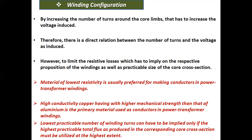The material of lowest resistivity is usually preferred for making conductors in power transformer windings. High conductivity copper, having higher mechanical strength than aluminium, is the primary material used as conductors in power transformer windings.